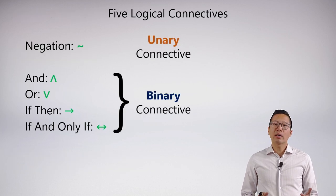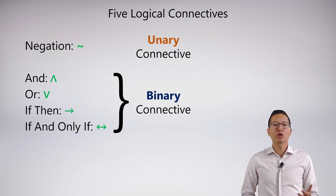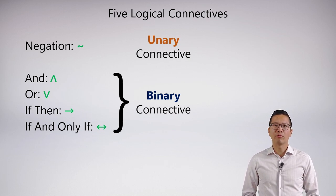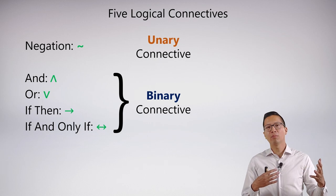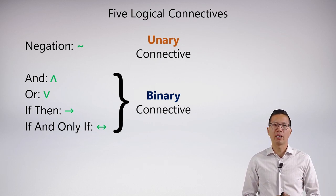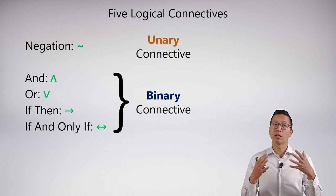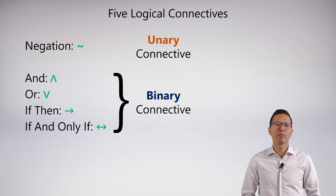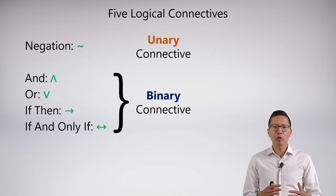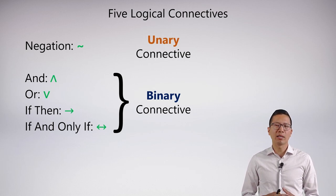Here are the five logical connectives that we learned: negation, and, or, if-then, and if and only if. We divided them between unary and binary style connectives — binary meaning they have two halves. We're going to have to take a closer look at these connectives so that our symbolization goes a lot smoother.